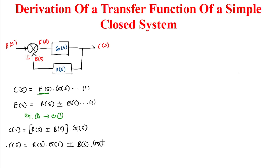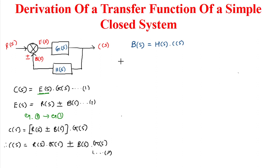We can write B(s) = H(s) · C(s), as seen in the block diagram. Substituting B(s) into Equation 3 gives C(s) = R(s)·G(s) ± H(s)·C(s)·G(s).